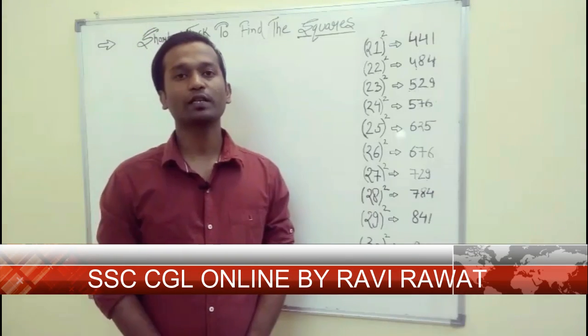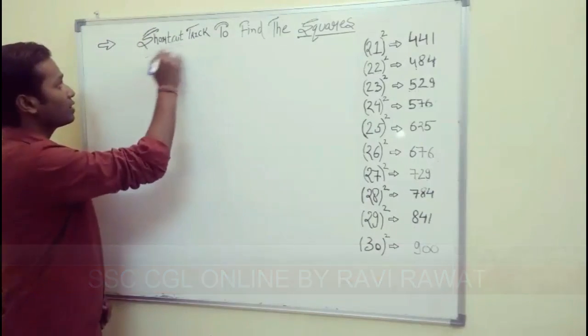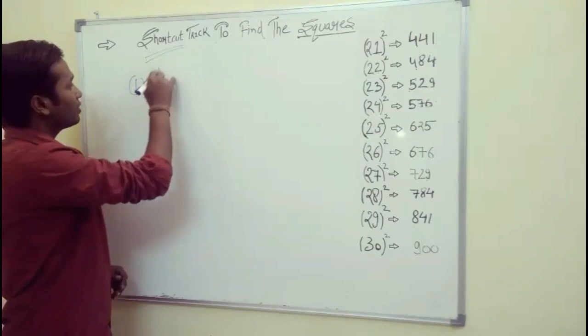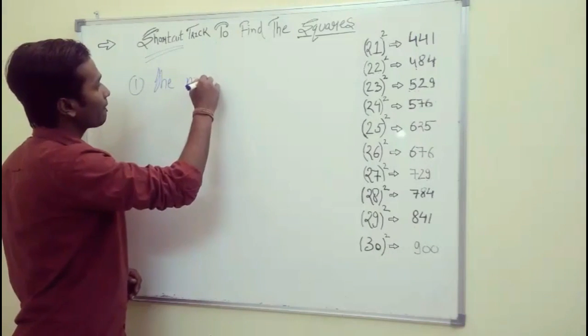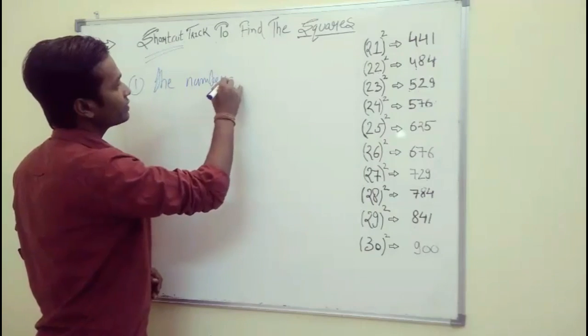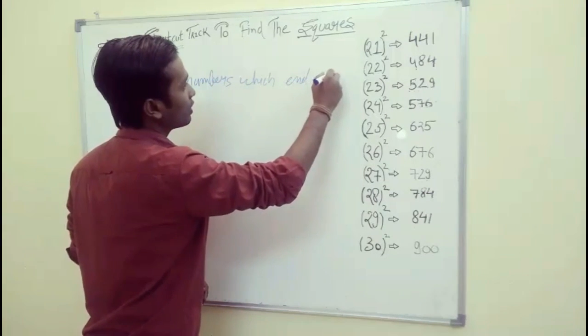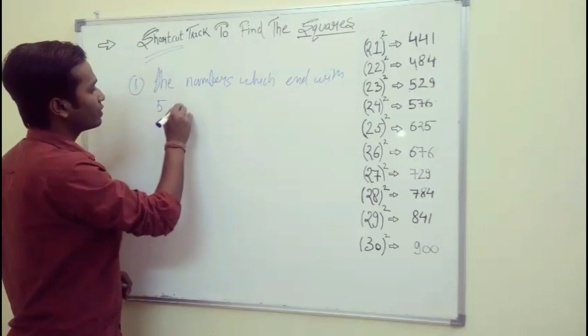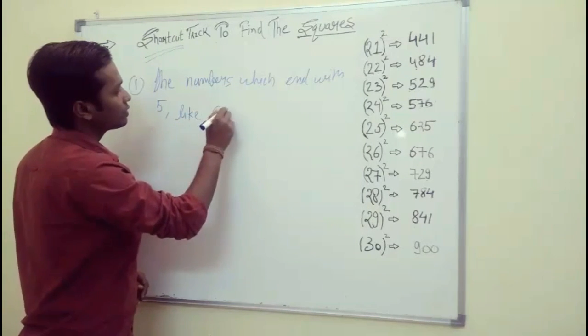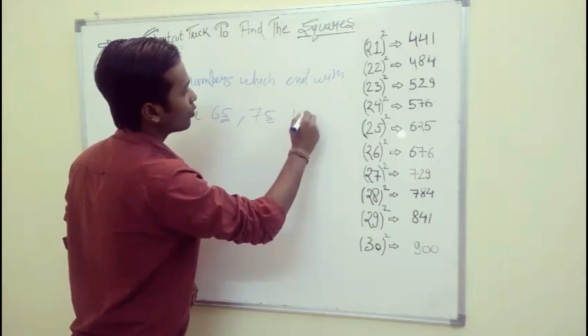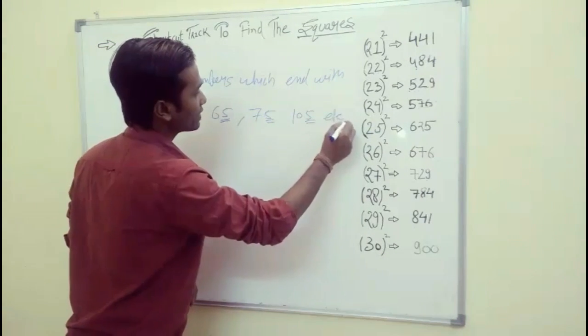So guys, we are here to find the square with shortcut trick. Today's lecture is divided into three parts. First, the numbers which end with 5, like 65, 75, 105, etc.